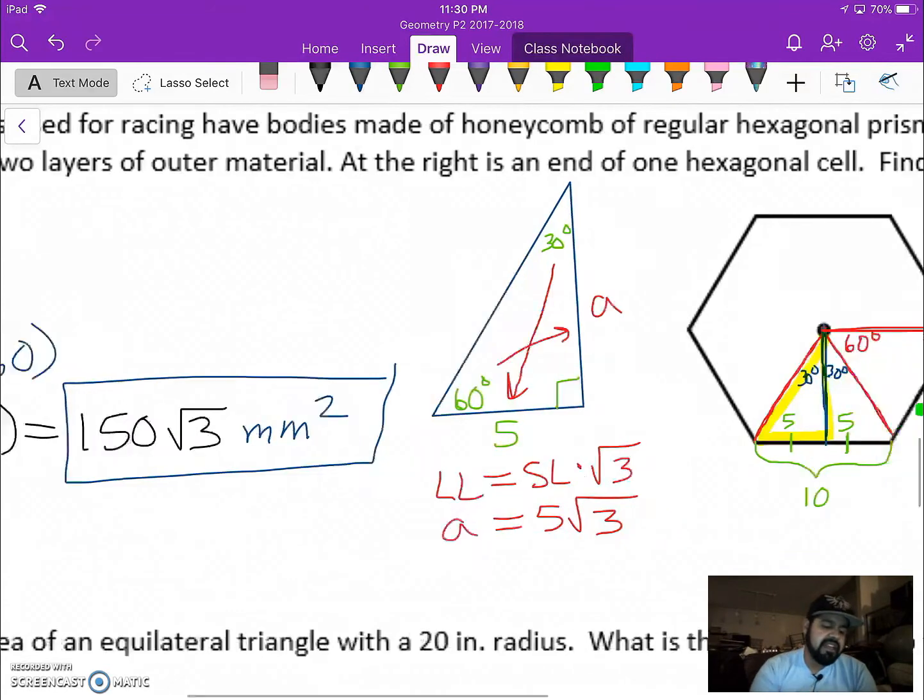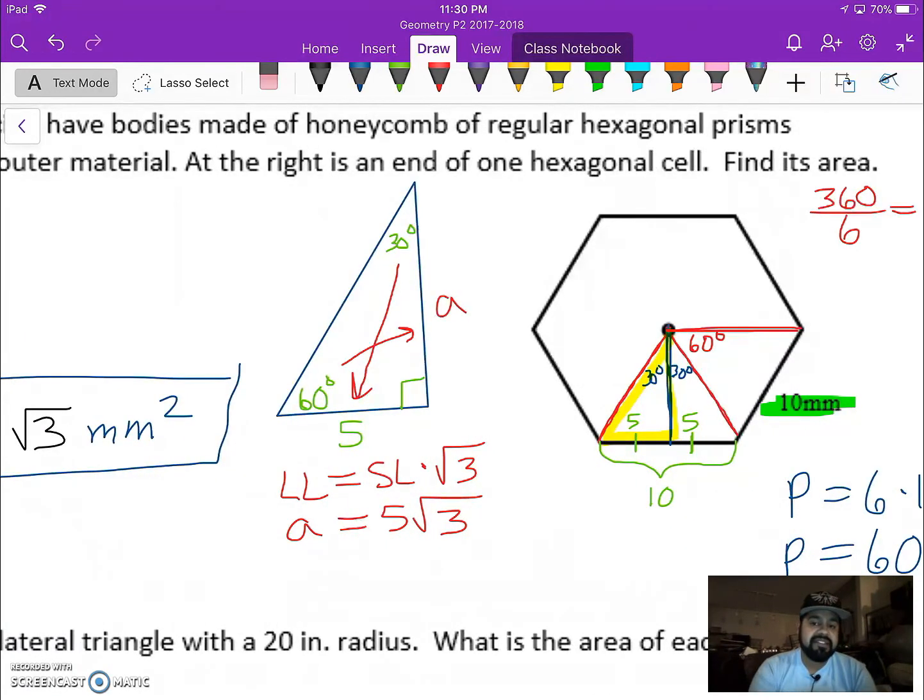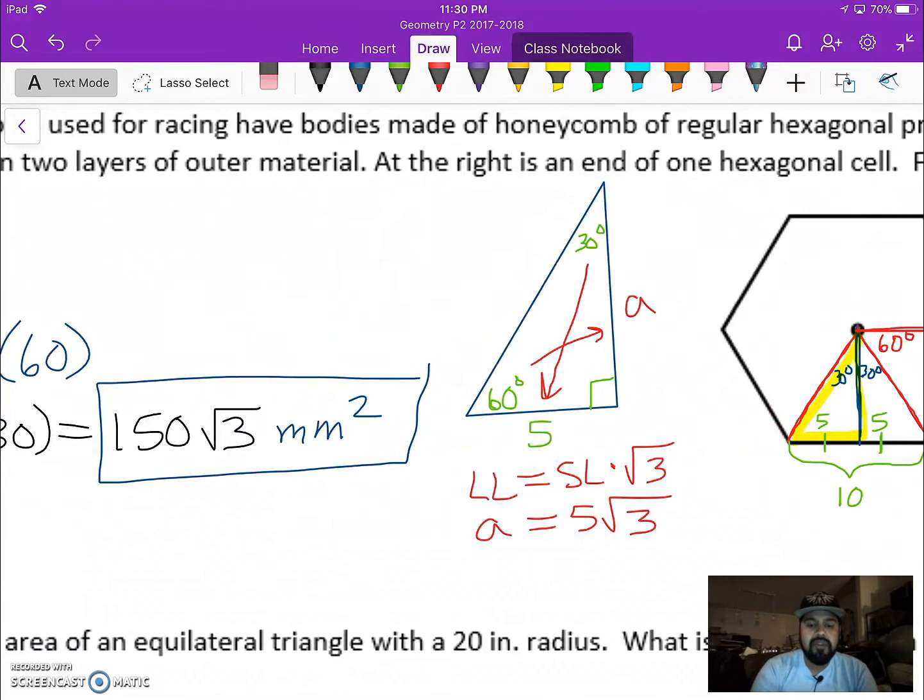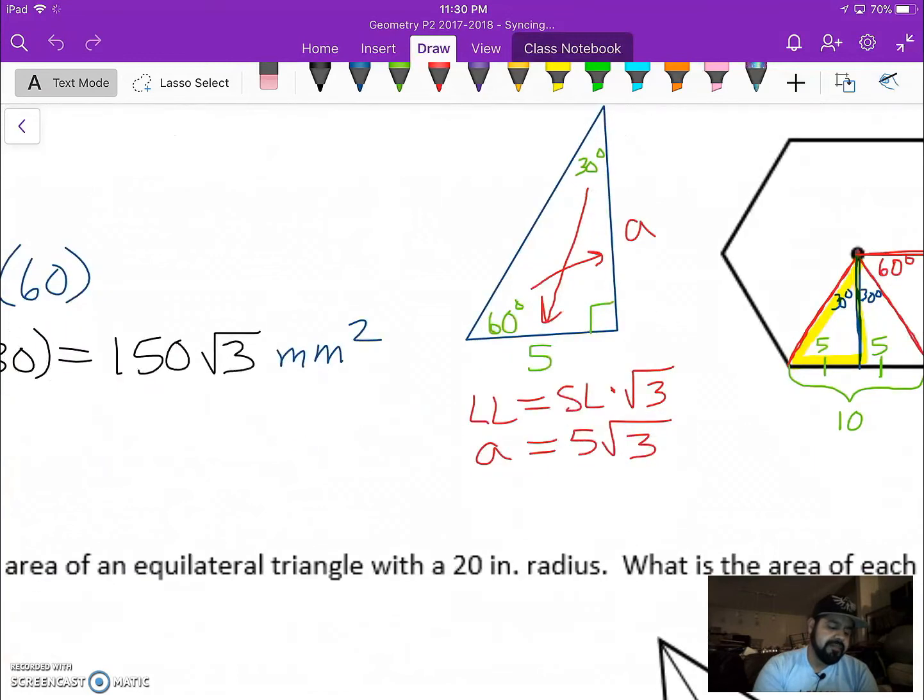Now notice again that in my problem I did not tell you whether to find the exact value or the approximate value. So this would be our exact answer. If we were to type this in our calculator, which I left over here, we should have 150 rad 3 as a decimal. I know where my square root button is. There we go, and we get 259.807.